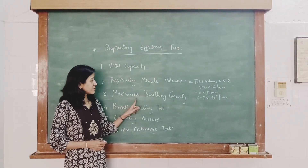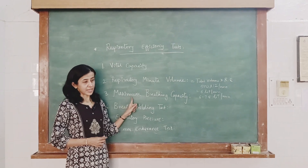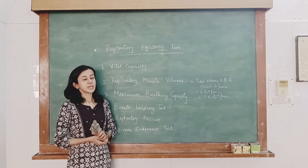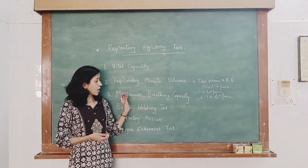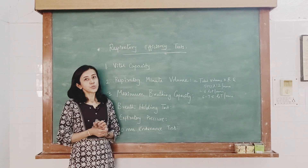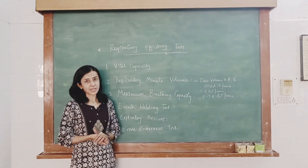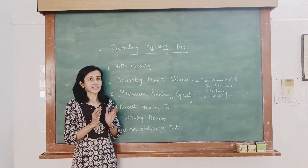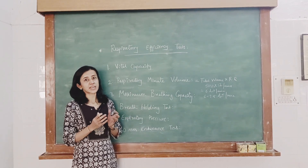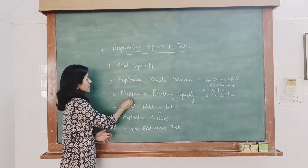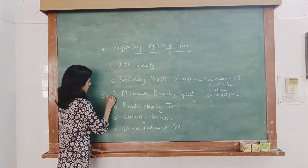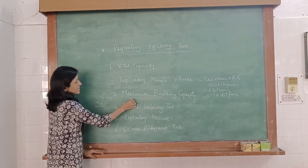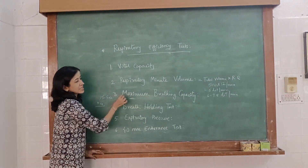Next is maximum breathing capacity — that is the maximum volume of air which can be ventilated on command during a given interval of time. Here we take an interval of 15 seconds. Ask the subject to ventilate as deeply and as rapidly as possible for 15 seconds into the Douglas bag. The volume of air collected represents the breathing capacity for 15 seconds, which is then multiplied by 4 to get the value per minute.